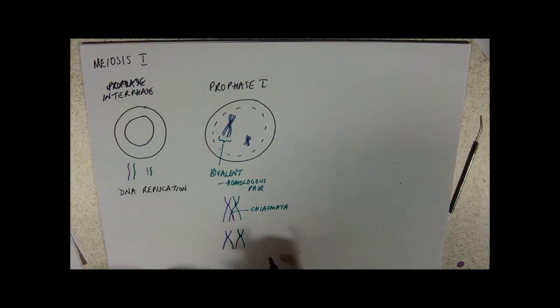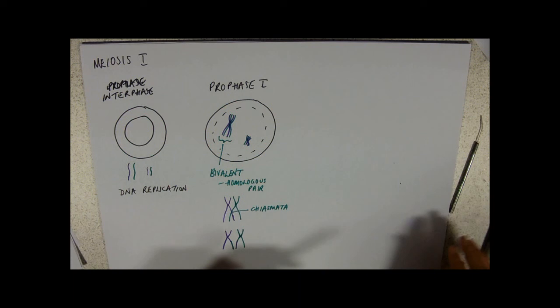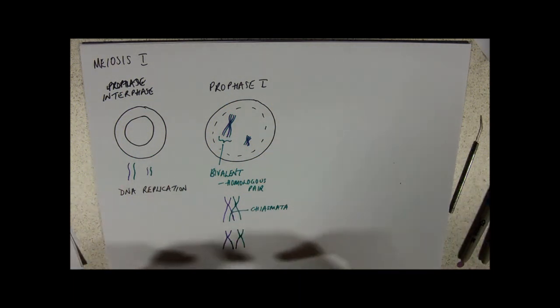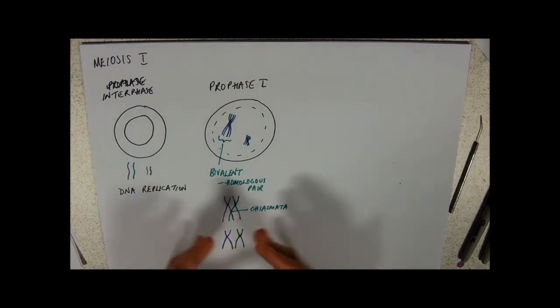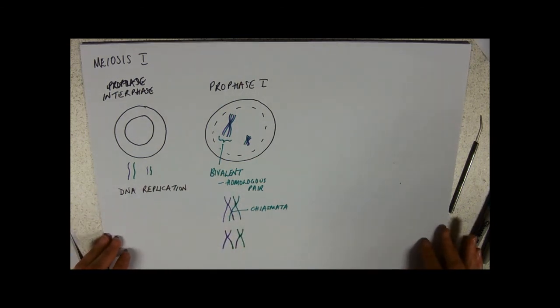So, now, each one of these chromatids is genetically unique. It has a mix, you know, it has different alleles on it. So, that's prophase one with crossing over, making, giving us a nice source of variation there.